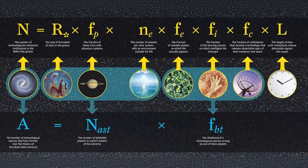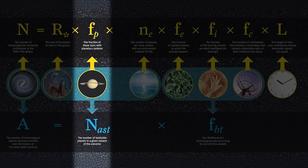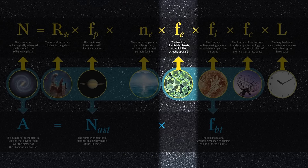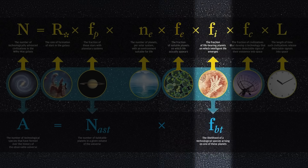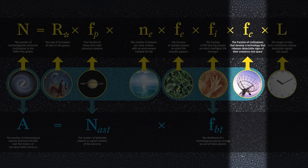The first term is the rate at which stars form. The second term is the fraction of those stars that have planets, f sub p. The next term is the number of planets in the habitable zone. After that is the fraction of those planets where a biogenesis event occurs — where life actually forms. Then the fraction of planets on which intelligence emerges, and after that the fraction where that intelligence goes on to create a civilization.